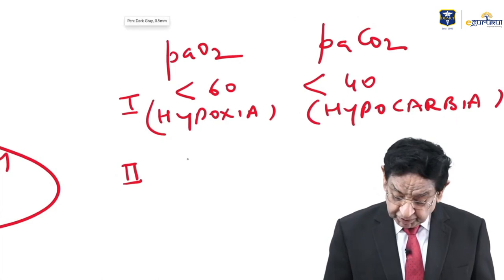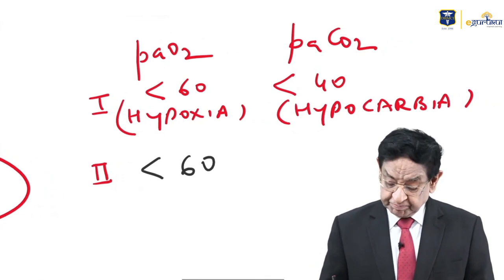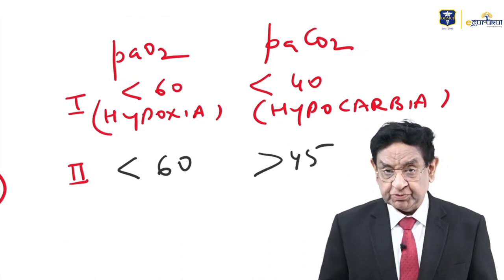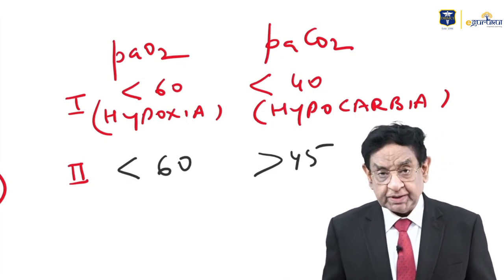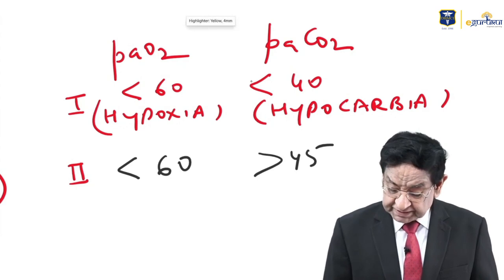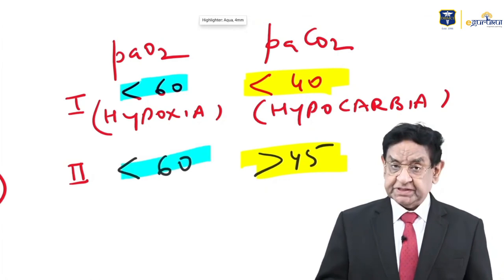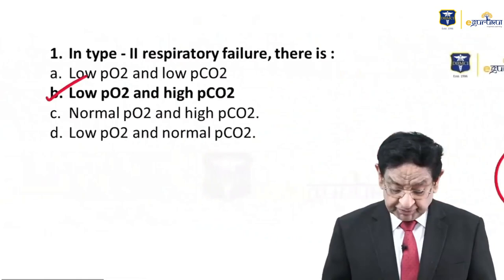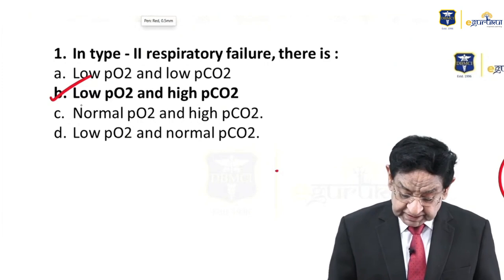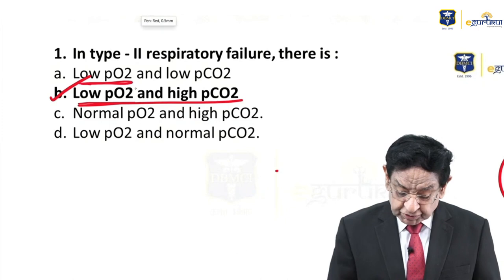In Type 2 respiratory failure, PaO2 is less than 60 mmHg but PaCO2 is more than 45 mmHg. Remember, normal PaCO2 is 40 to 45. The major difference between Type 1 and Type 2 is the CO2 level — less than 40 in Type 1, more than 45 in Type 2. The PaO2 less than 60 is common to both.